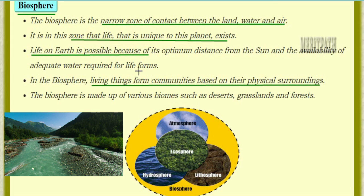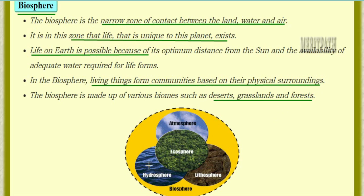The survival of organisms is a continuous process — new organisms are born, old ones die; life is a continuous process. In the biosphere, living things form communities based on their physical surroundings. The biosphere is made up of various things such as deserts, grasslands, and forests, and it comprises the atmosphere, ecosphere, hydrosphere, and lithosphere.